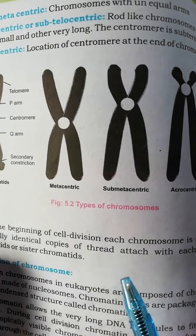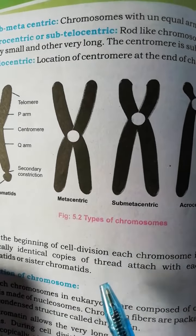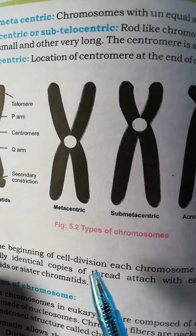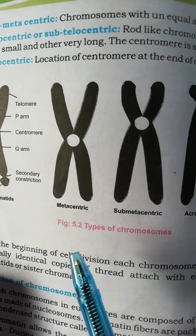Assalamualaikum warahmatullahi wabarakatuh. This is the book of biology for 9th class students. The chapter name is Cell Cycles and today's topic is Types of Chromosomes.